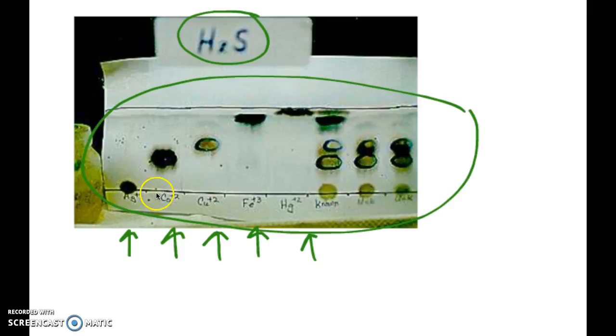The distance would be from the beginning, the starting line is marked here, to the center of each spot. And then you're going to have to calculate your RF, which is dividing that distance by the distance from the beginning to the distance of the solvent.